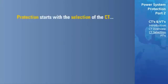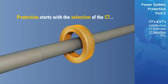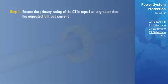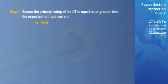Proper protection starts with the selection of current transformers. The following is a simple procedure that can be used to check whether or not there is the possibility of CT saturation. The first step is to ensure that the primary rating of the current transformers is equal to or greater than the expected full-load current. We can determine the primary rating of a CT by looking at its ratio. For a ratio of 100 to 5, a CT has a primary rating of 100, meaning that no more than 100 amps should be passed through the CT under normal operating conditions.